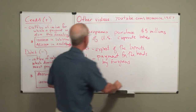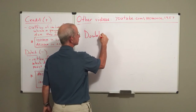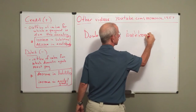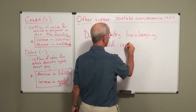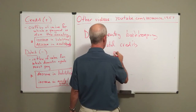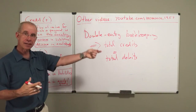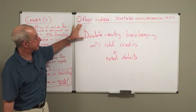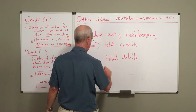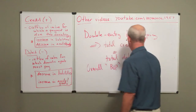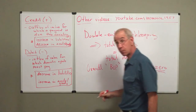What does this mean? Since we have double-entry bookkeeping, this implies that the total credits for a given country must equal the total debits by construction. Every time there's a transaction on one side, there's an equal amount on the other side. This means that in the balance of payments context, the overall balance of payments must equal zero by construction.